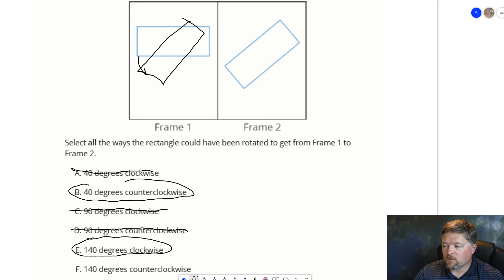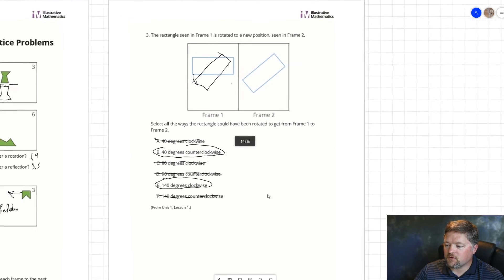But 140 counterclockwise would do the opposite and give a facing this direction. So, that is not going to work. So, 40 degrees counterclockwise or 140 degrees clockwise will work to transition frame one to frame two.